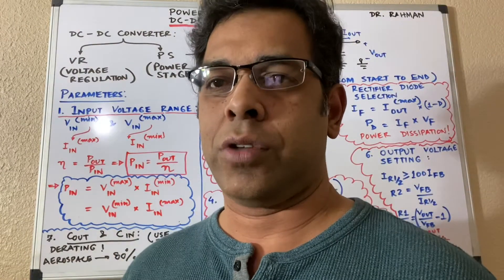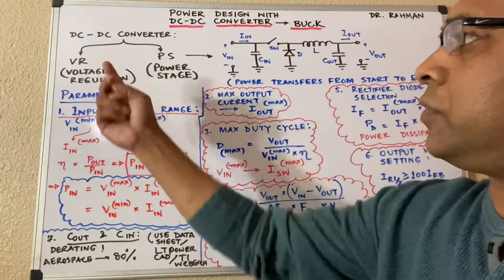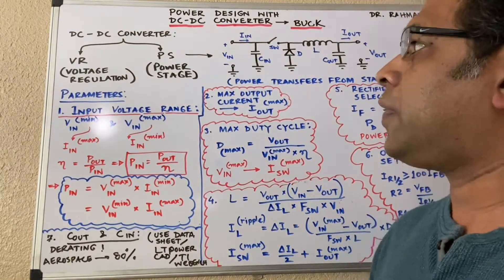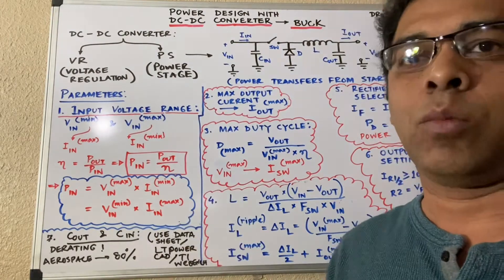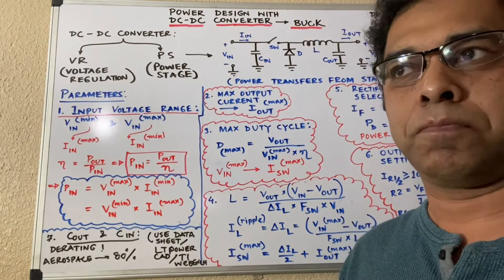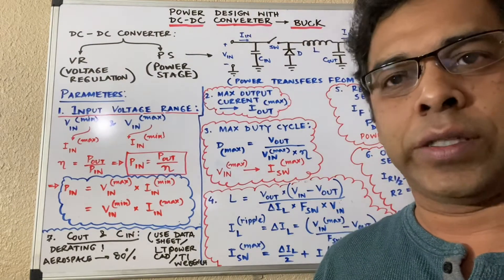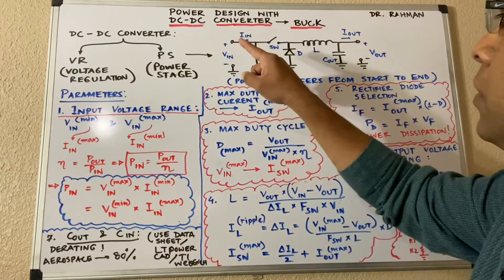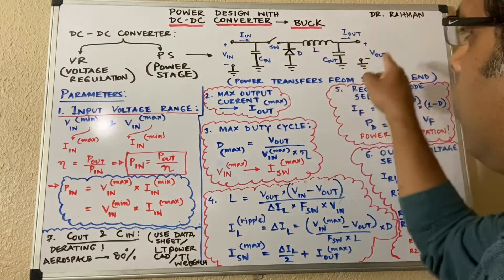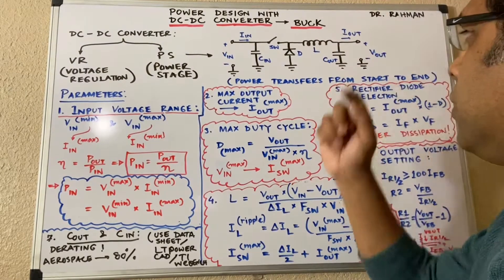The remaining part of the DC-DC converter discussion has two components. One is VR, which stands for voltage regulation, and the other is the power stage. Voltage regulation means you can filter out noise and unwanted signals — you can regulate unwanted ripple and noises mixed into your important signal. The power stage contains all the passive components.